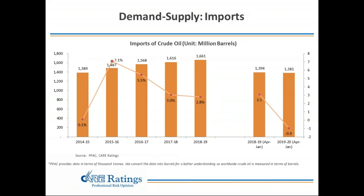India imports more than 80% of its crude oil requirements. In the current financial year, India has imported almost 4.5 million barrels per day, with import dependency rising to 85% from 83% a year ago. Crude oil imports grew at a CAGR of 4.6% during FY15–19, but have declined marginally by 0.9% in the current April–January period. US sanctions on Iran from May 2019 led to a decline in imports, as Iran was India's third largest crude supplier. India has compensated by importing additional crude from the US, Kazakhstan, and signing a new pact with Russia.